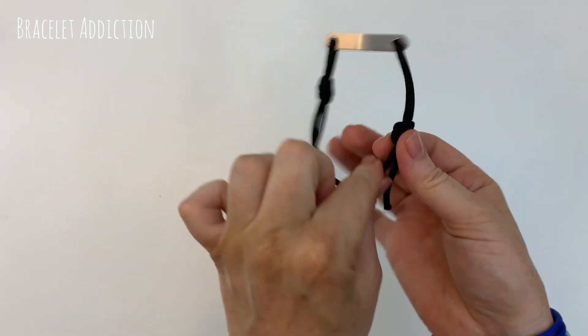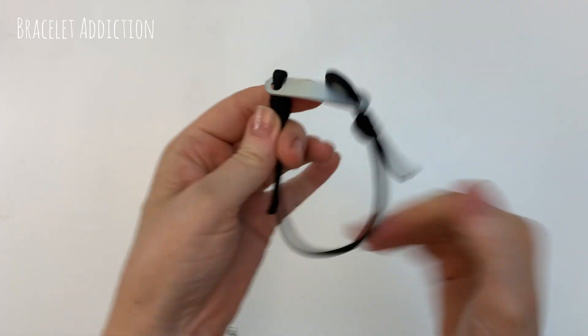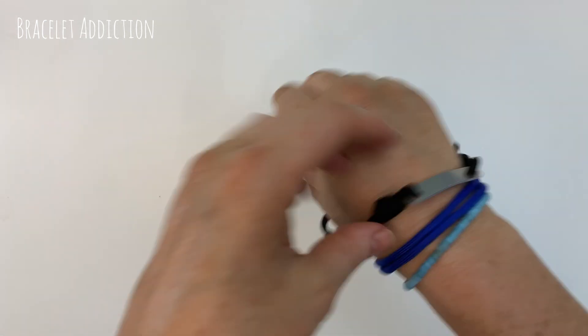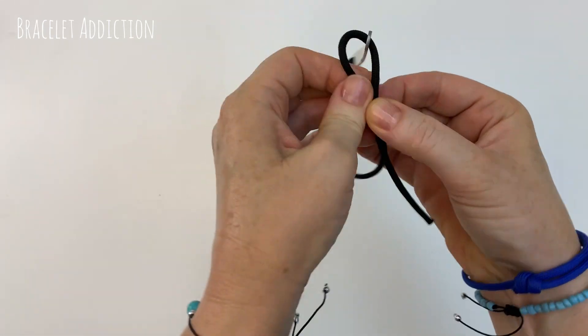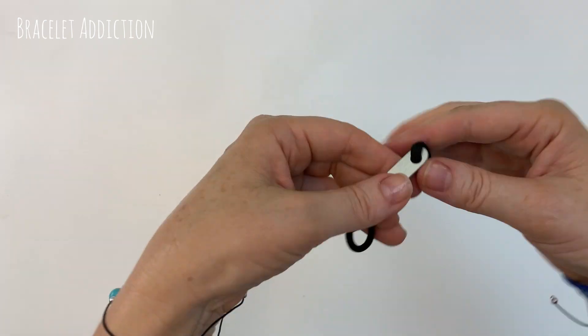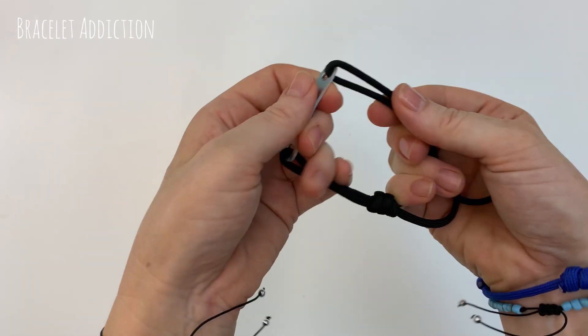Now you want to check that your sliding knots are sliding okay and also check your bracelet for size. So just extending it and making sure it fits over your wrist. And then you can bring it back smaller again. You can always undo and re-tie these knots to get them in the right position.